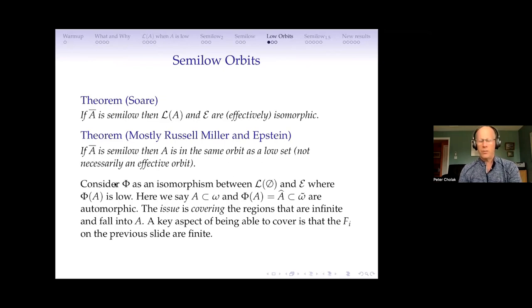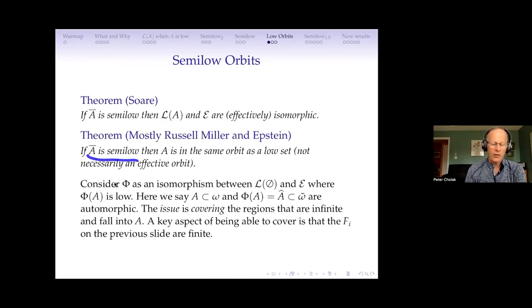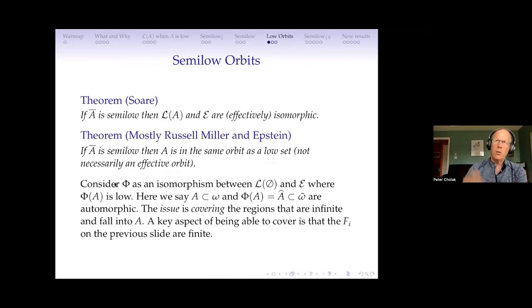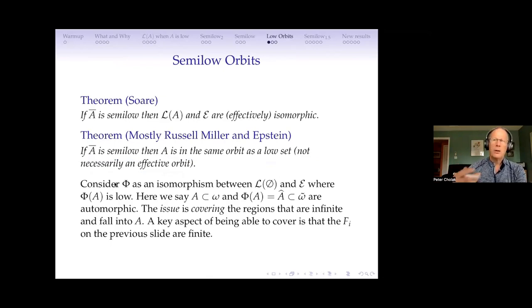If A-complement is semi-low then A is in the same orbit as a low set, but not necessarily in an effective orbit — the isomorphism φ I build could be effective itself but need not be.